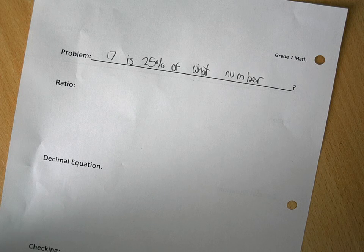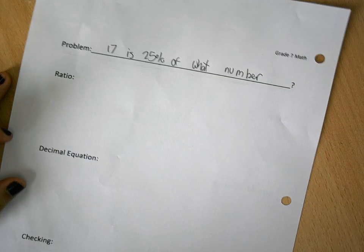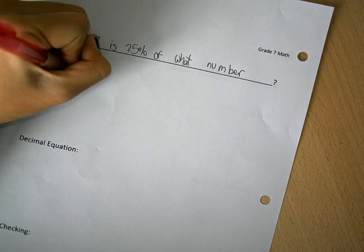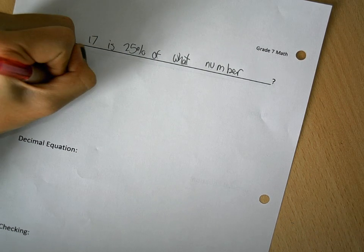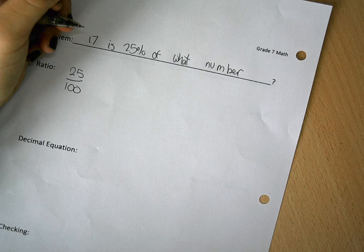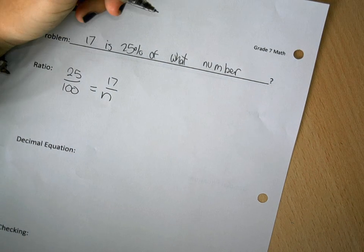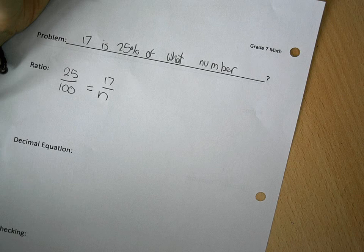So you're going to put 25, the percentage is 25 over 100, and then that equals to 17 over n, because it's of one number. So you don't know yet.